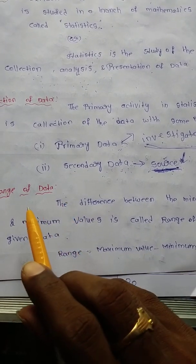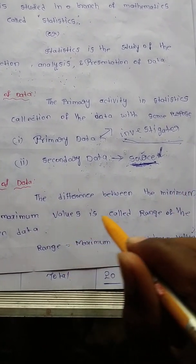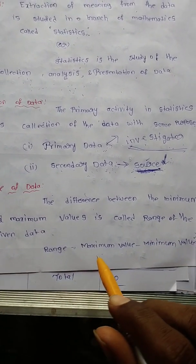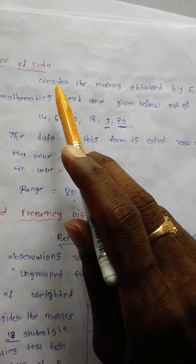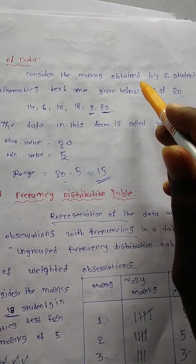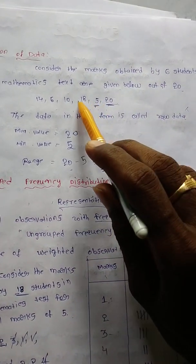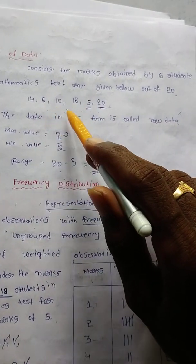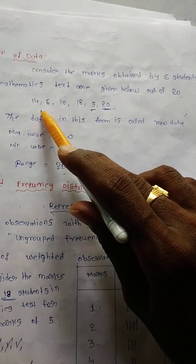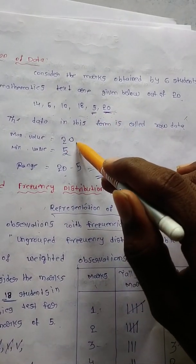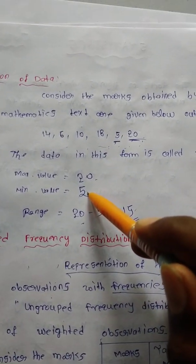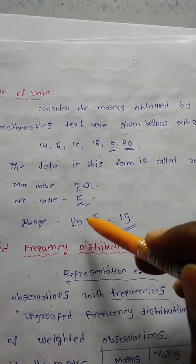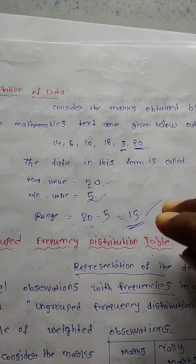Now let us look at the range of data. The difference between the minimum and maximum value is called the range of the data. Range = maximum value − minimum value. For example, consider the marks obtained by 6 students in a mathematics test: 14, 6, 10, 18, 5, 20. The maximum value is 20 and the minimum value is 5. Range = 20 − 5 = 15. That is the range of the data.